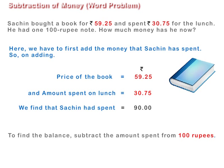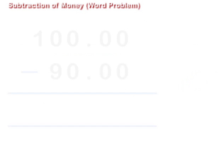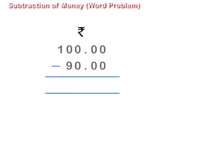To find the balance, subtract the amount spent from Rs. 100.00. On subtracting Rs. 90.00 from Rs. 100.00, we find that Sachin now has Rs. 10.00.